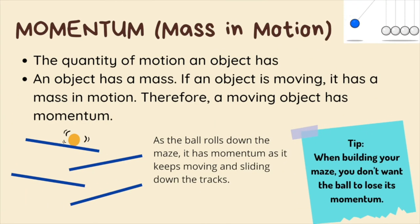Momentum is how much motion an object has. It is also known as a mass in motion. This is because an object has a mass, and if that object is moving, it has a mass in motion. Therefore, a moving object has momentum. For example, the ball has momentum when it rolls down the maze. When you are building your maze, you want the ball to not lose its momentum. If the ball loses momentum, it will stop rolling.